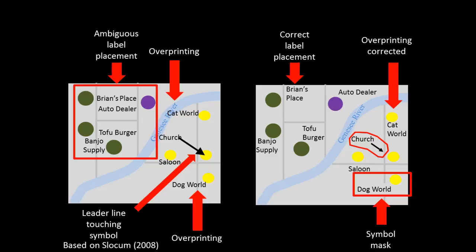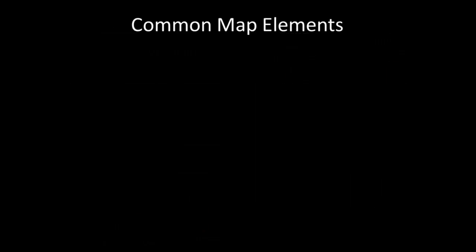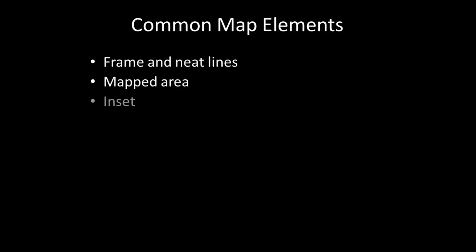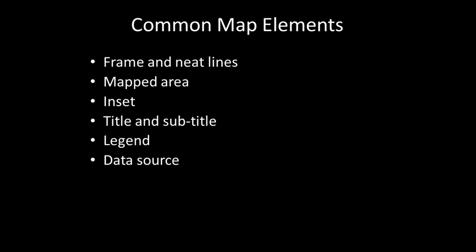Now that you've learned about the design of map symbols and labels, I will discuss the design of the overall map itself in terms of common map elements. Maps contain standard elements used to create a final map product. These elements include frame and neat lines, mapped area, insets, title and subtitle, a legend, data source attribution, scale bars, and the orientation.